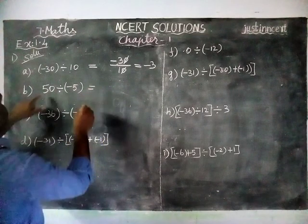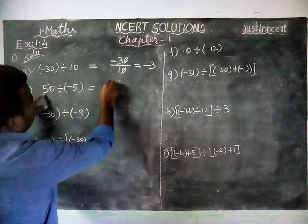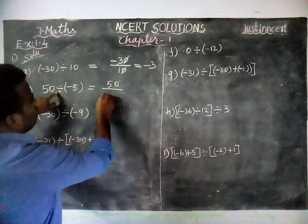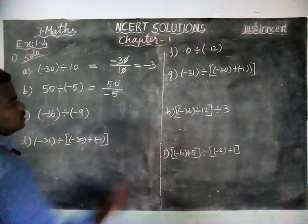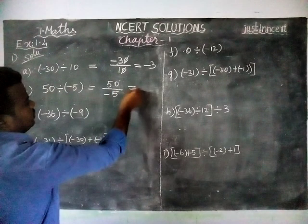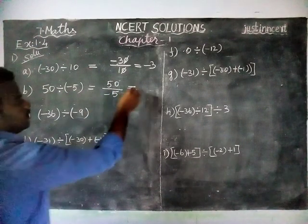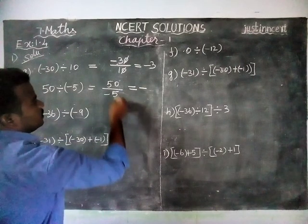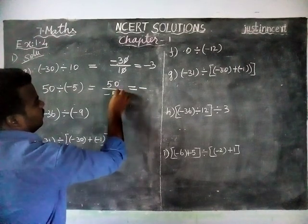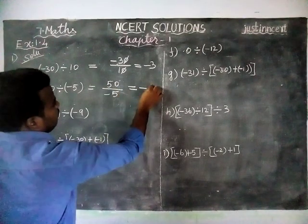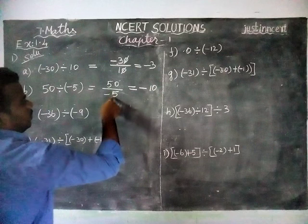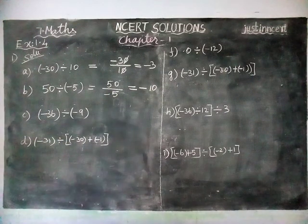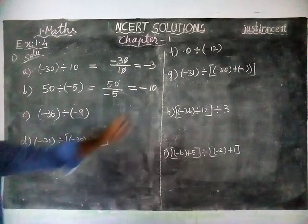Next sum, option B: 50 divided by minus 5. The same rule — signs are different, so we will get a minus sign. 50 divided by 5 will be 10. When we are dividing 50 by 5, we are getting 10. So the answer is minus 10.